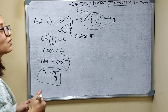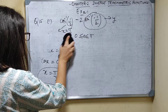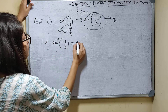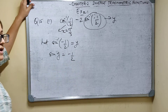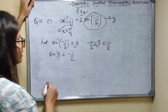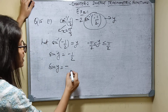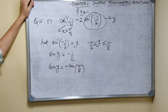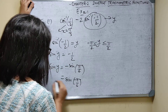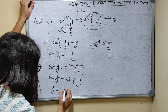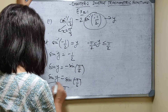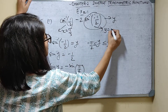Now let sin inverse(minus 1 by 2) equal y, so sin y equals minus 1 by 2. For sin inverse, y lies between minus pi by 2 and pi by 2. Sin y equals negative of 1 by 2, which is negative sin pi by 6. Since sin(minus theta) equals minus sin theta, sin y equals sin(minus pi by 6). So y equals minus pi by 6, which is minus 30 degrees — satisfying the range condition.